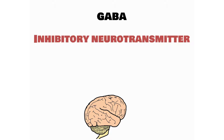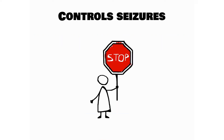As we all know, GABA is an inhibitory neurotransmitter. Opening of the GABA receptor causes chloride influx. By this process, Clonazepam controls seizures.